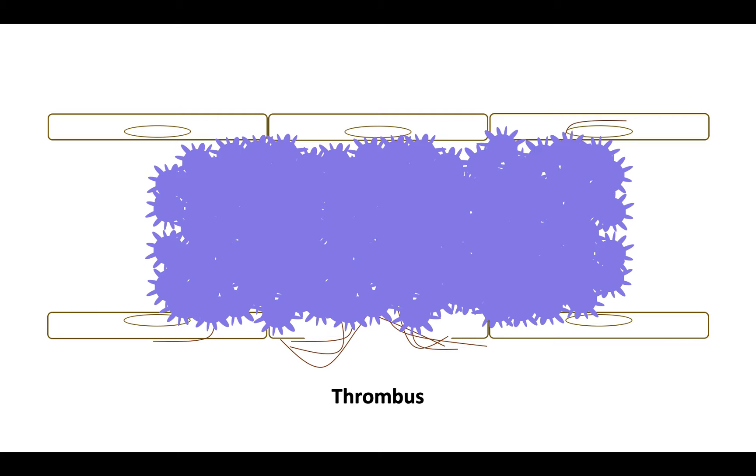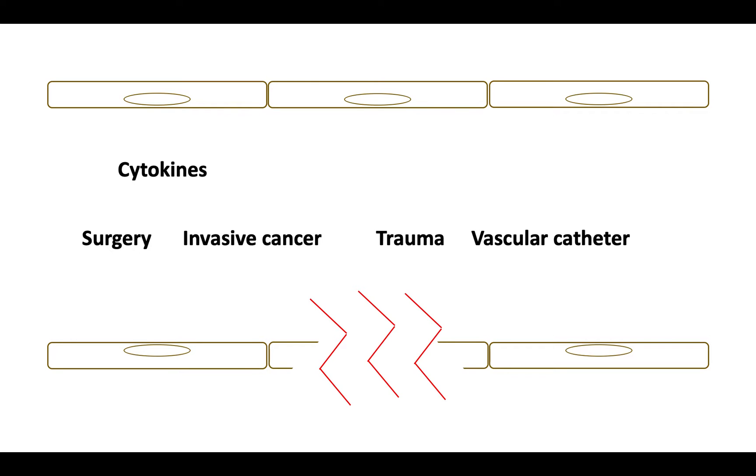Let's now focus on the first step of Virchow's triad that speaks of endothelial injury. Let's go back to the endothelium and introduce damage. Damage can occur due to commonly expected factors such as surgery and trauma, but also occurs due to the damage caused by invasive cancer or the presence of a vascular catheter. It can be caused by the damage inflicted by inflammatory cytokines or inflammation due to metabolic disorders like diabetes. It can also occur due to toxic metabolites from smoking or drugs.